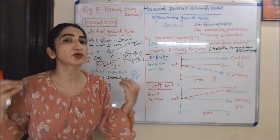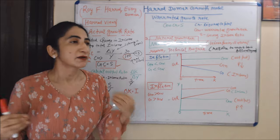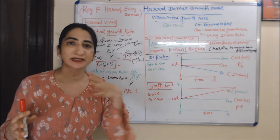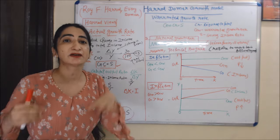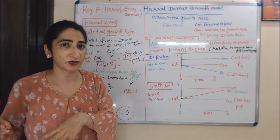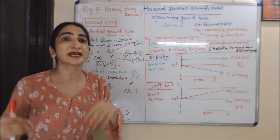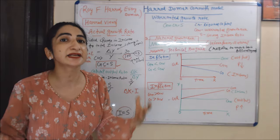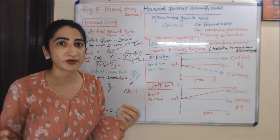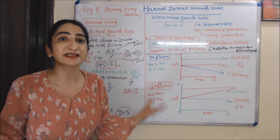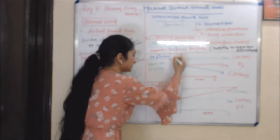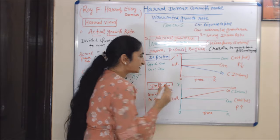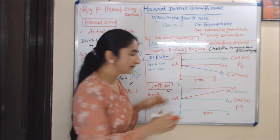Harrod and Domar say that for stability in the economy, all three growth rates must be equal to each other. But most of the time these growth rates are not equal, which creates instability — either deflation or inflation.